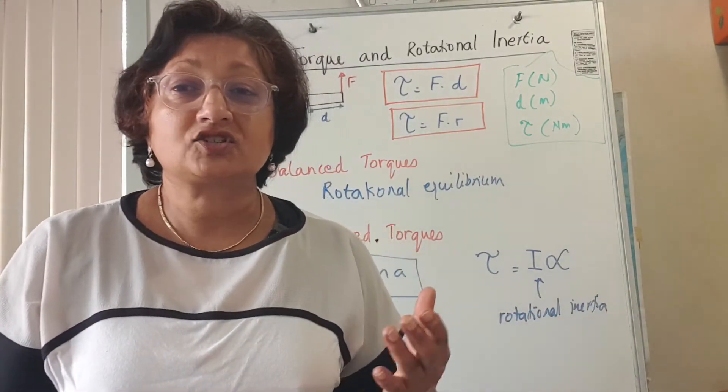So what is rotational inertia? Rotational inertia tells us how hard it is to get an object to start to spin, or if an object is already spinning, how hard is it to stop spinning? That's what rotational inertia is all about. Now what does rotational inertia depend on? Rotational inertia actually depends on two things: it depends on how massive the object is, or in other words, the mass of the object, and also how is this mass distributed in an object.